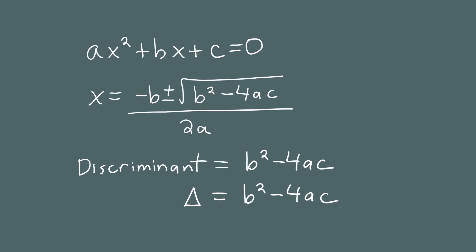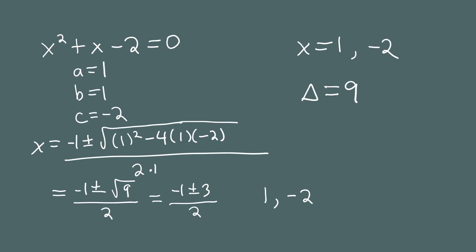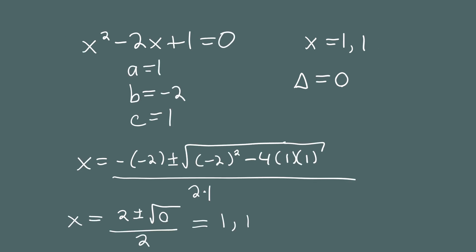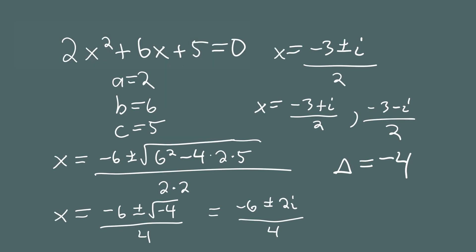The discriminant is b squared minus 4ac — the number under the radical. In x squared plus x minus 2 equals 0, the discriminant was 9 and the answers were 1 and negative 2: two different real solutions. In x squared minus 2x plus 1 equals 0, the discriminant was 0 and we got a repeated root of 1. In 2x squared plus 6x plus 5 equals 0, the discriminant was negative 4 and the solutions were two complex numbers.